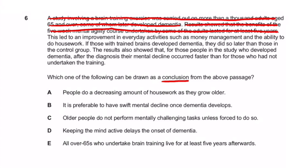The passage continues: 'This led to an improvement in everyday activities such as money management and the ability to do housework.' Again, not an opinion — it's stating that the program produced these improvements, so it's factual. Then: 'If those with trained brains developed dementia, they did so later than those in the control group.' Again, fact — just stating the results of the experiment, so we cross that out too.